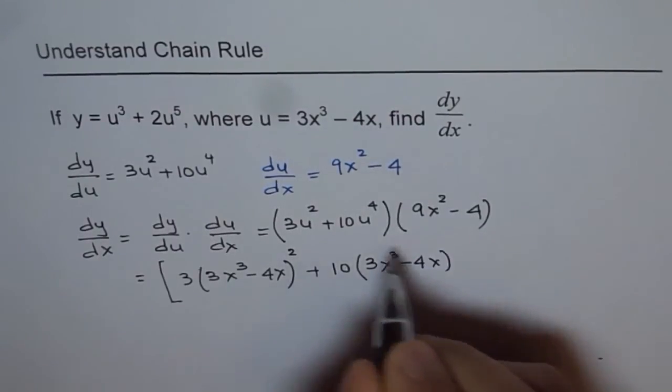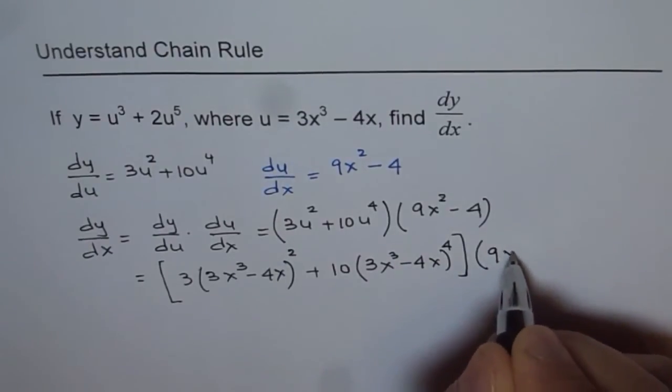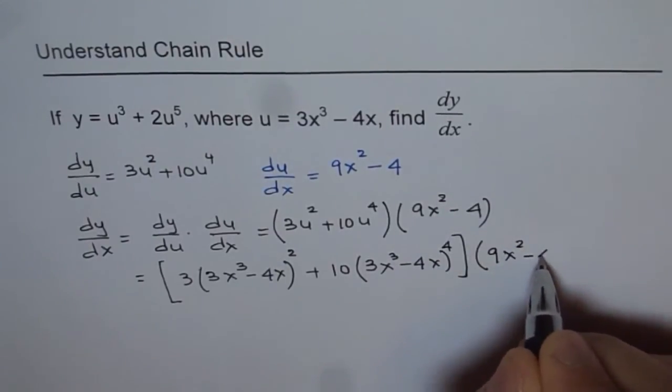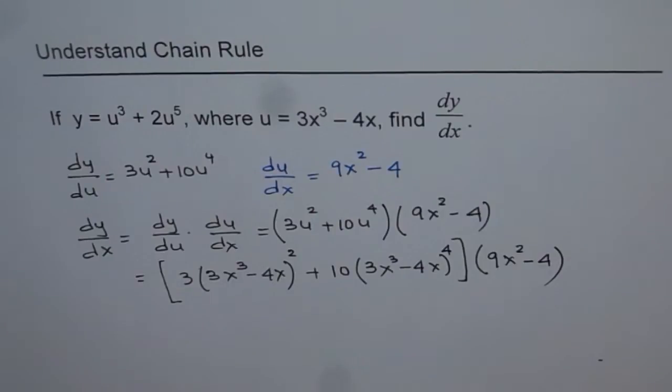That is how you get dy by dx given y as a function of u and u as a function of x. I hope you understand chain rule. We will do a few more questions to get the concept clear in our mind about it. Thank you.